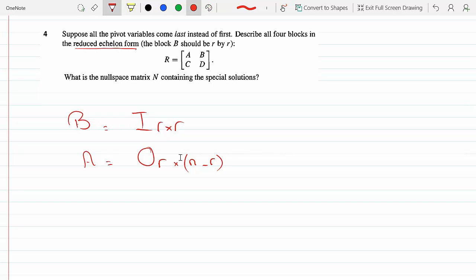So that makes C also a zero matrix, and what's the size of that matrix? Well, if it's an M by N, we already have A taking R rows and we have a total of M rows.